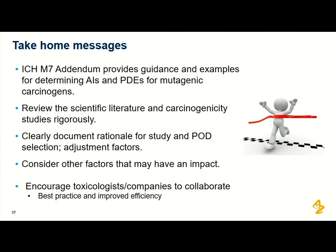In summary: as impurities offer no benefit to the patient, pharmaceutical companies are responsible for controlling these to as low levels as possible. The ICH M7 Addendum provides guidance and examples for calculating acceptable intakes and PDEs for class one mutagenic carcinogens. It's so important to review the scientific literature and carcinogenicity studies rigorously — understand your dose response, the tumours you're seeing, their human relevance, and select an appropriate cancer potency value.